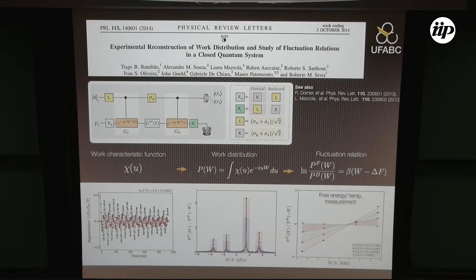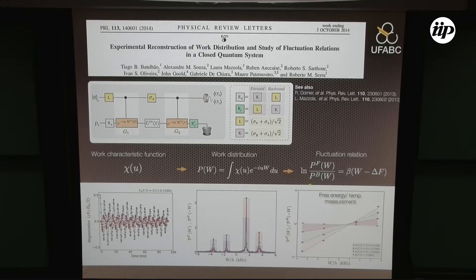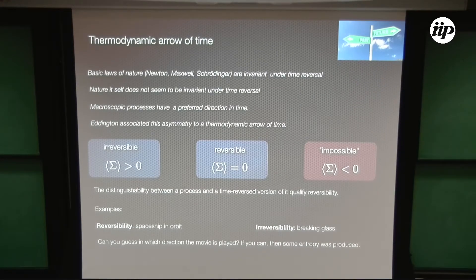From the experimental data encoded in the ancillary spin magnetization, we access the work probability distribution by taking the Fourier transform. The same strategy applies to heat for open system evolution. Using the Crooks relation — which states that the logarithm of the ratio of forward to backward probability distributions equals a linear function — we can measure free energy experimentally. The slope of this curve gives the temperature of the system, which is about nano-Kelvin in our experiment — the effective temperature of the magnetic system, not the temperature of the sample.